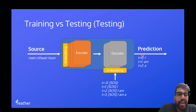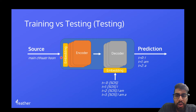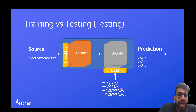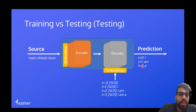Then we concatenate the word 'I' onto the start-of-sequence token, so it becomes SOS I. Again, using the whole source sentence, we try to predict the next word 'am'. Then we concatenate 'am' to get SOS I am, and using the source encoding we try to predict the word 'a', and so forth.